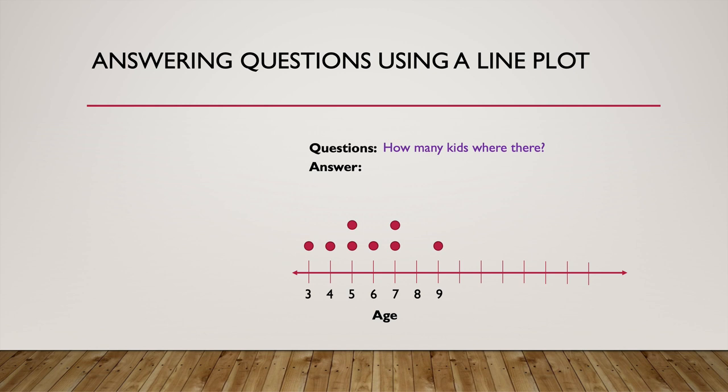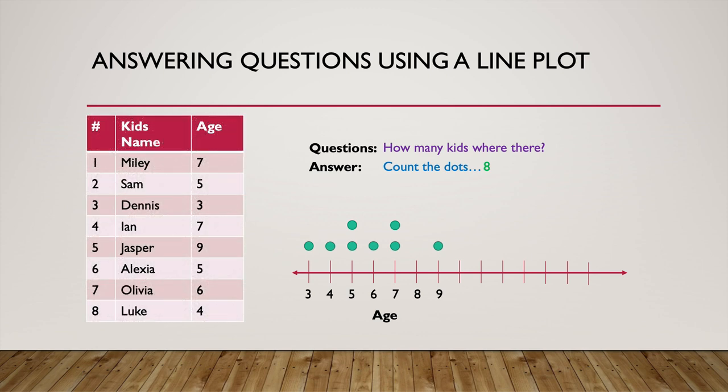Well, to answer that question, all you have to do is count the dots. So can you count the dots? One, two, three, four, five, six, seven, eight. All right, perfect. And that's our answer because each dot represented a kid. We saw that we just simply took their age and put it on the line and then removed it by turning those numbers into a dot. And so we can confirm this with our data. If we look at our data, we'll see that we have eight kids and we counted eight dots.